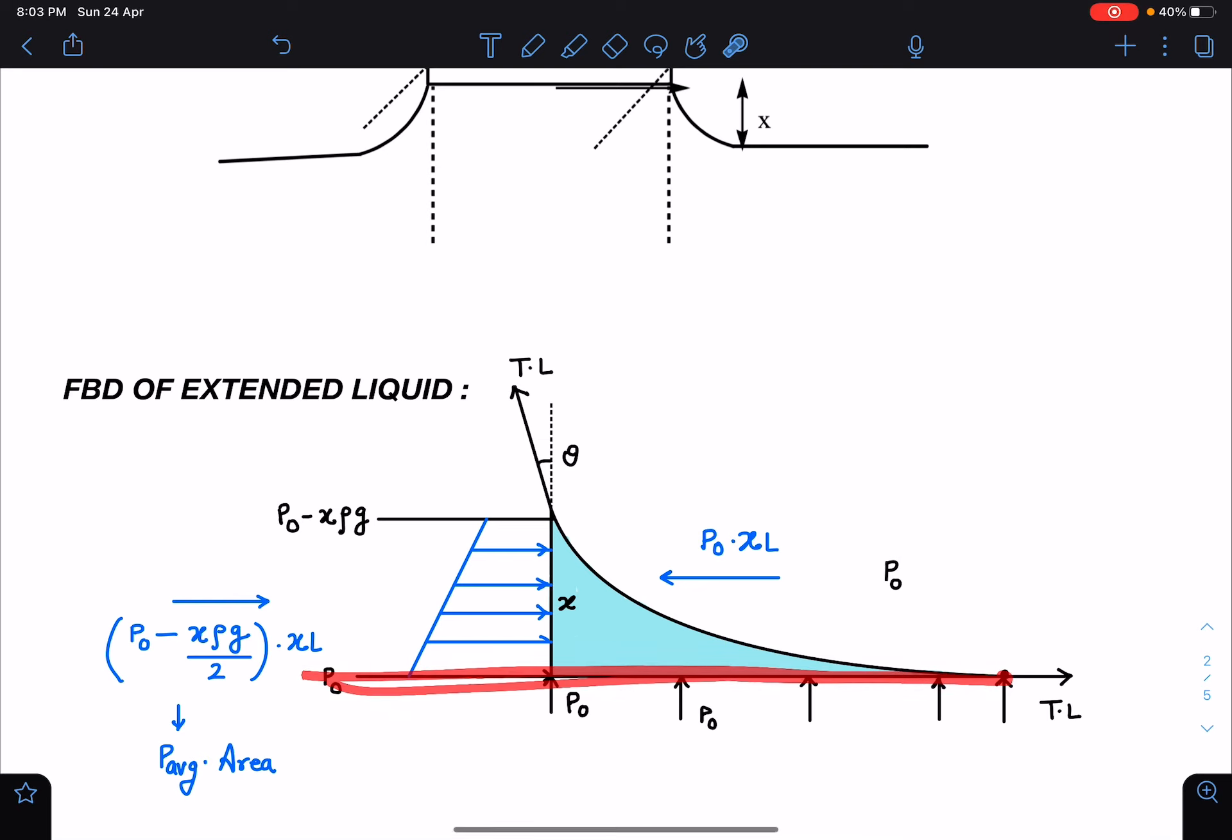Similarly here pressure is P₀. So in this horizontal level everywhere this pressure is P₀ and then pressure starts decreasing as we move up. Here pressure at this point where it is in contact with the plate, it will become P₀ minus x ρ g. Now plate will be pulling this part, pulling this liquid upward along the surface.